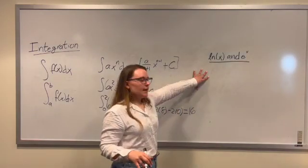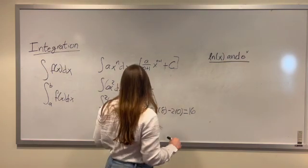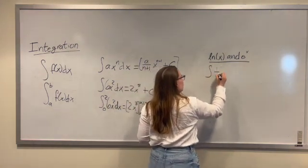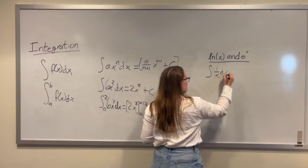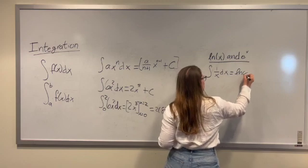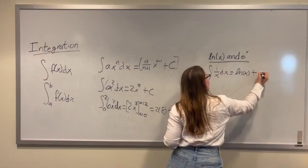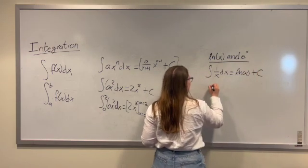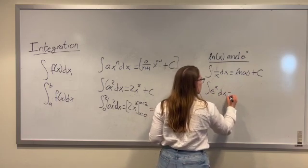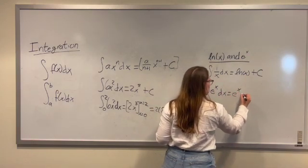Next up we're going to look at natural log of x and e to the x integration. So the integral of 1 over x dx is equal to natural log of x plus c. And the integral of e to the x dx is equal to e to the x plus c.